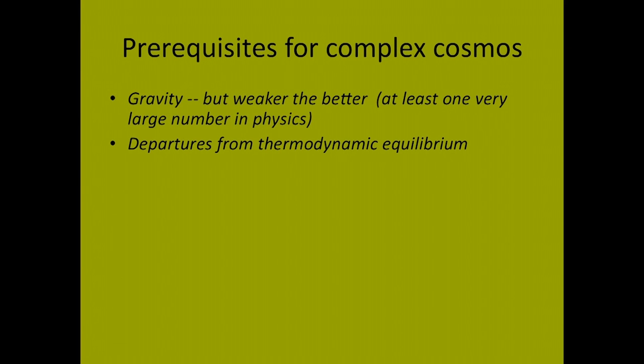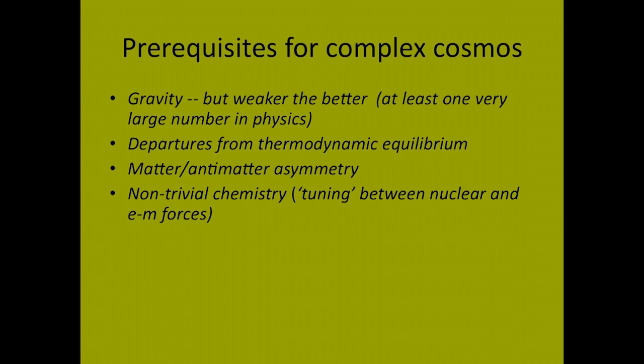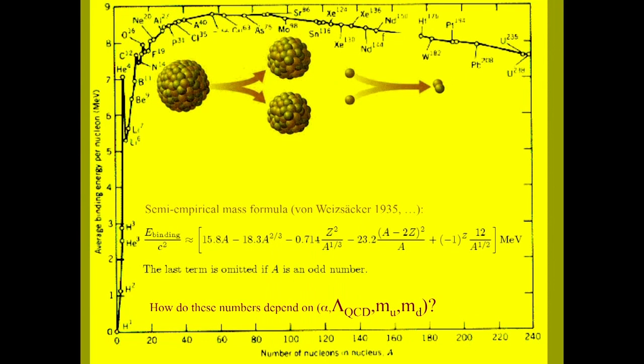There are other requirements. Clearly, the universe can't always stay in thermodynamic equilibrium. It's got to expand enough that it becomes transparent. Third, there must be matter-antimatter asymmetry. Otherwise, as the universe expanded and cooled, everything would annihilate into radiation. And another requirement for stars, planets and biospheres is the possibility of complex chemistry. If hydrogen were the only element, chemistry would be very dull. So we've got to have something like the binding energy diagram like this for chemical elements.